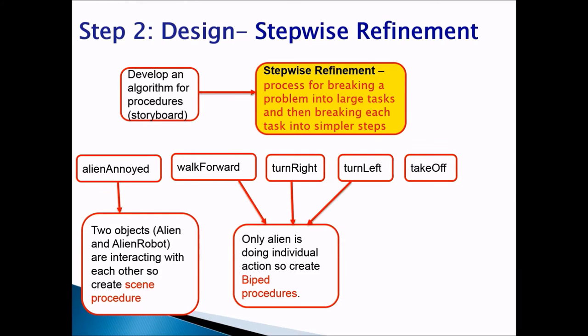Walk forward, turn right, and turn left — the alien is only doing an individual action and is not interacting with any other object. So we're going to create a biped procedure for walk forward, turn right, and turn left.